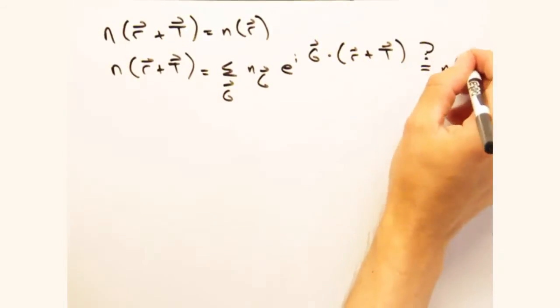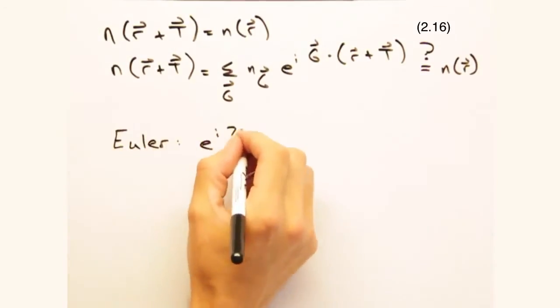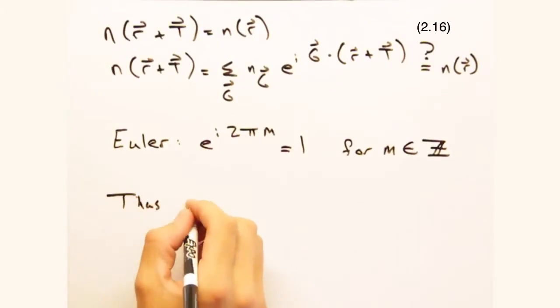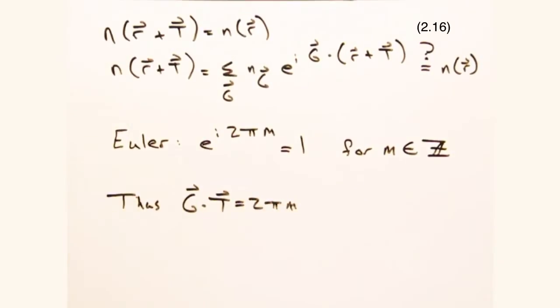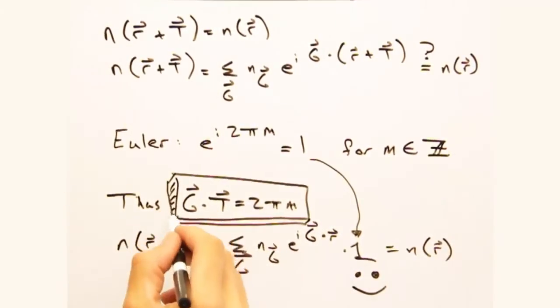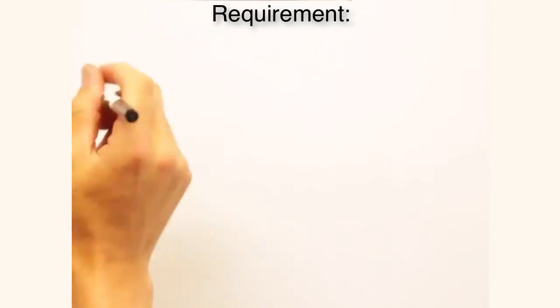From Euler, we know that e to the i times two pi times some integer is always one. So if g dot t equals two pi times some integer m, translational symmetry is maintained.